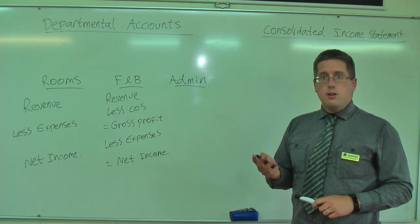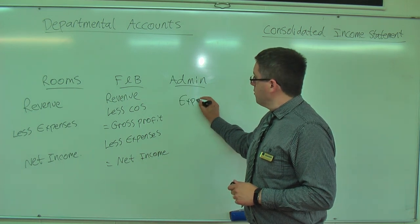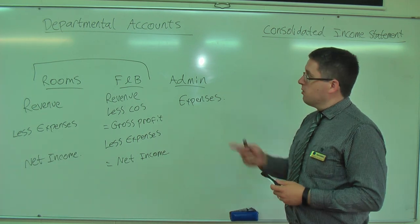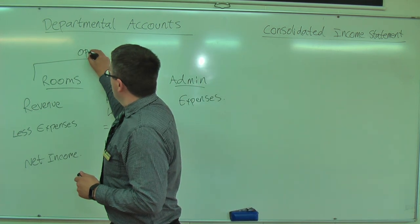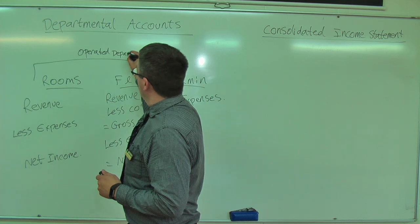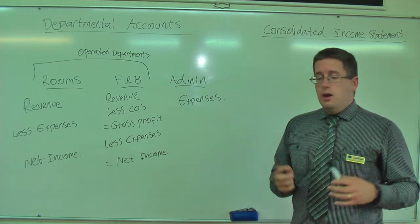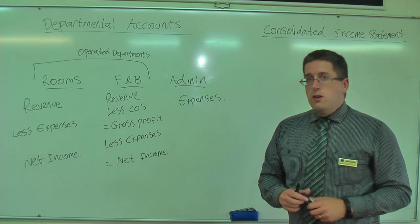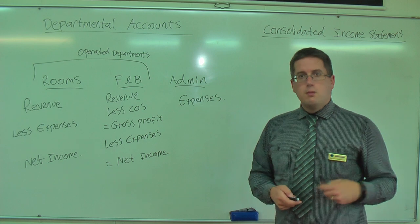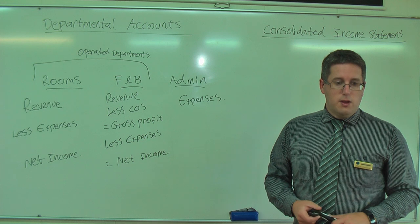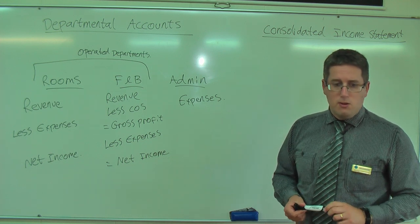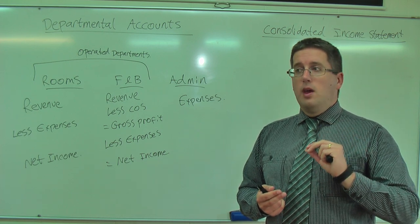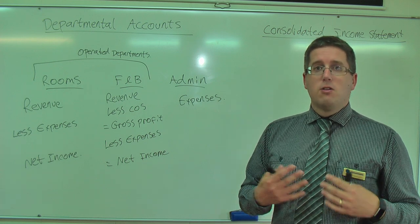Now for the administration department and other departments, things are slightly different. We only have expenses. So you're going to notice that there's a terminology used for some different departments. For rooms and F&B, these are what's called operated departments. An operated department means that there's an operation - there is revenue earned through that department. For any others - non-operated departments - so administration, maintenance, marketing. Non-operated departments are those that do not earn revenue, expenses only. So administration, marketing, and also utilities. Utilities, if you haven't heard the word, think power, water, telephone - these are the things that you need to connect to the outside world.